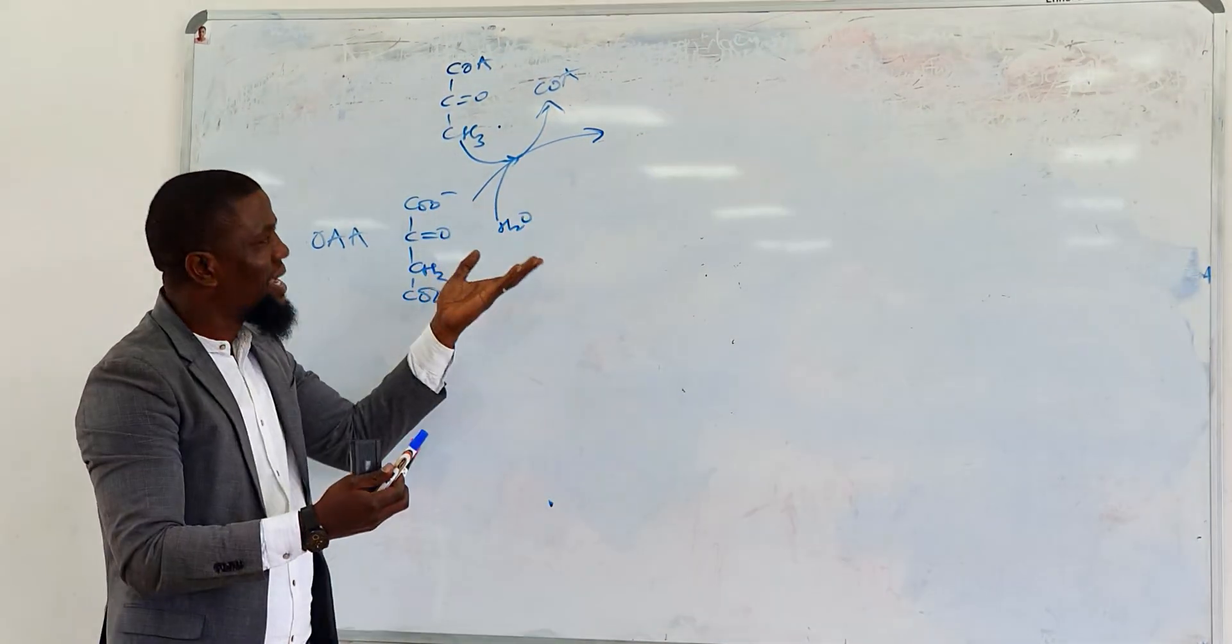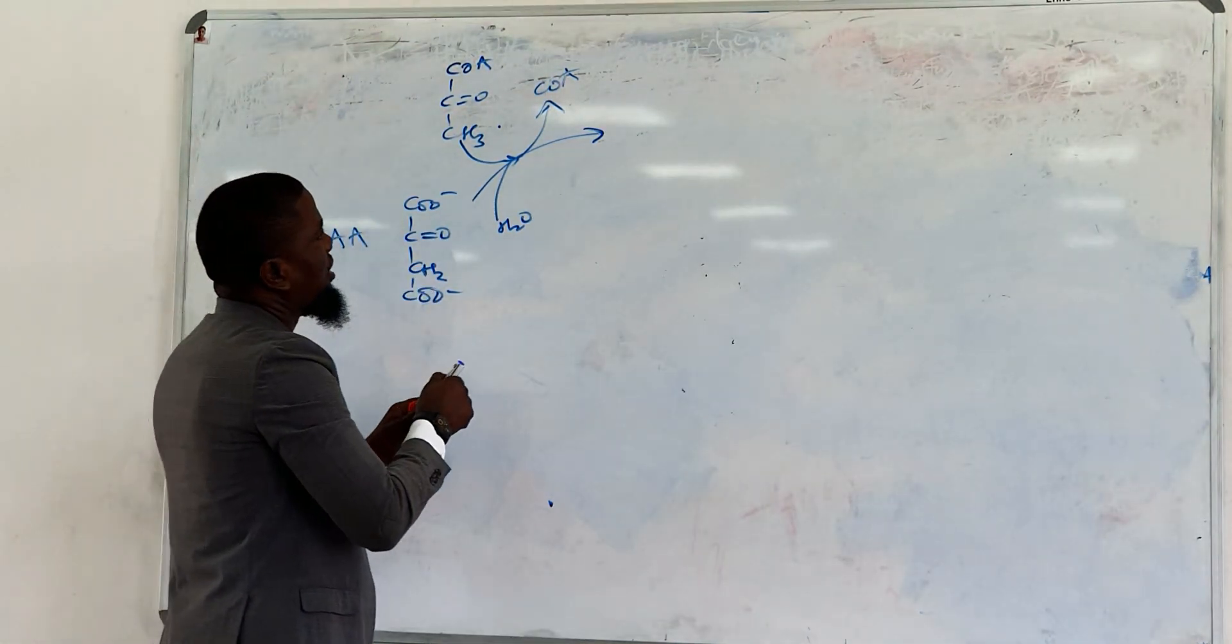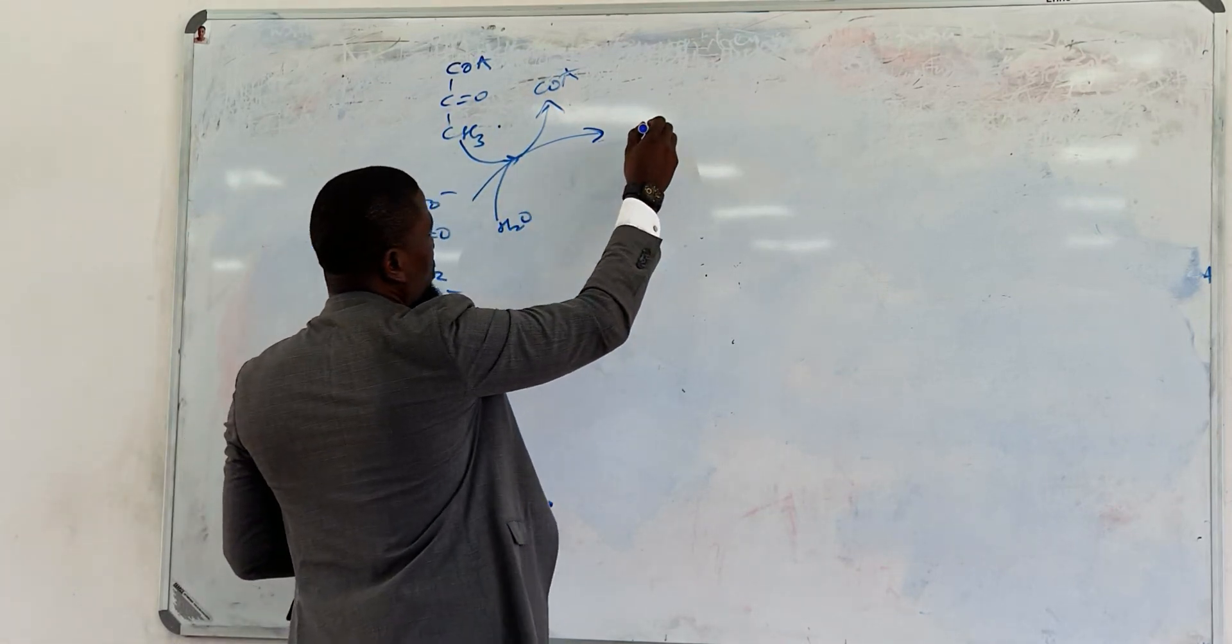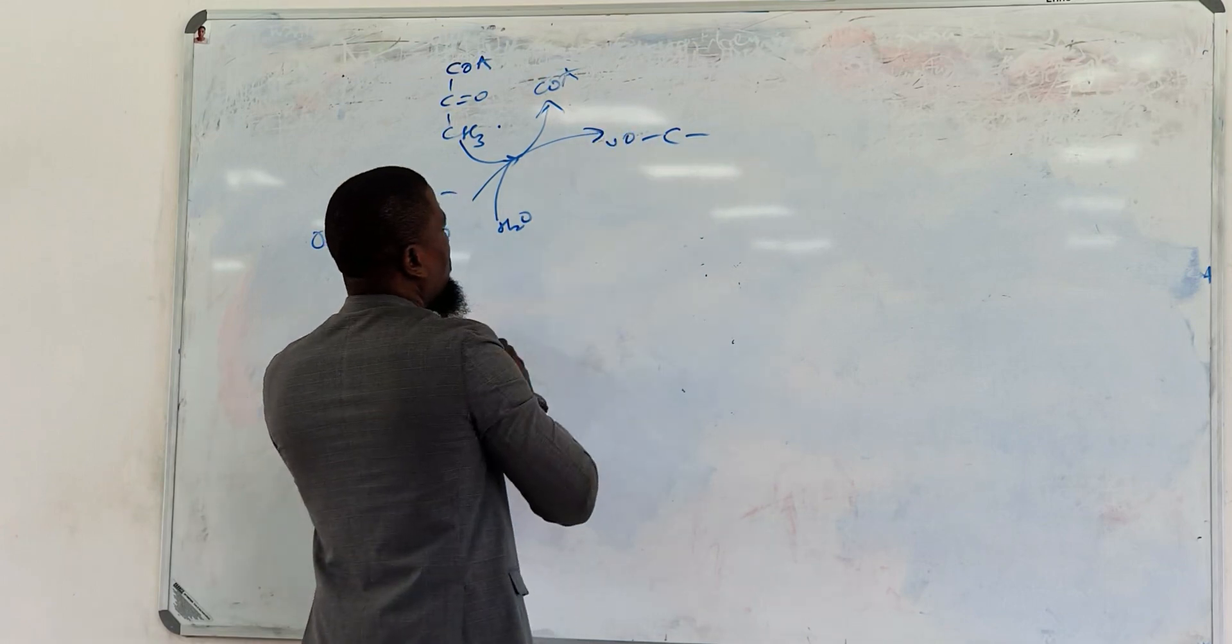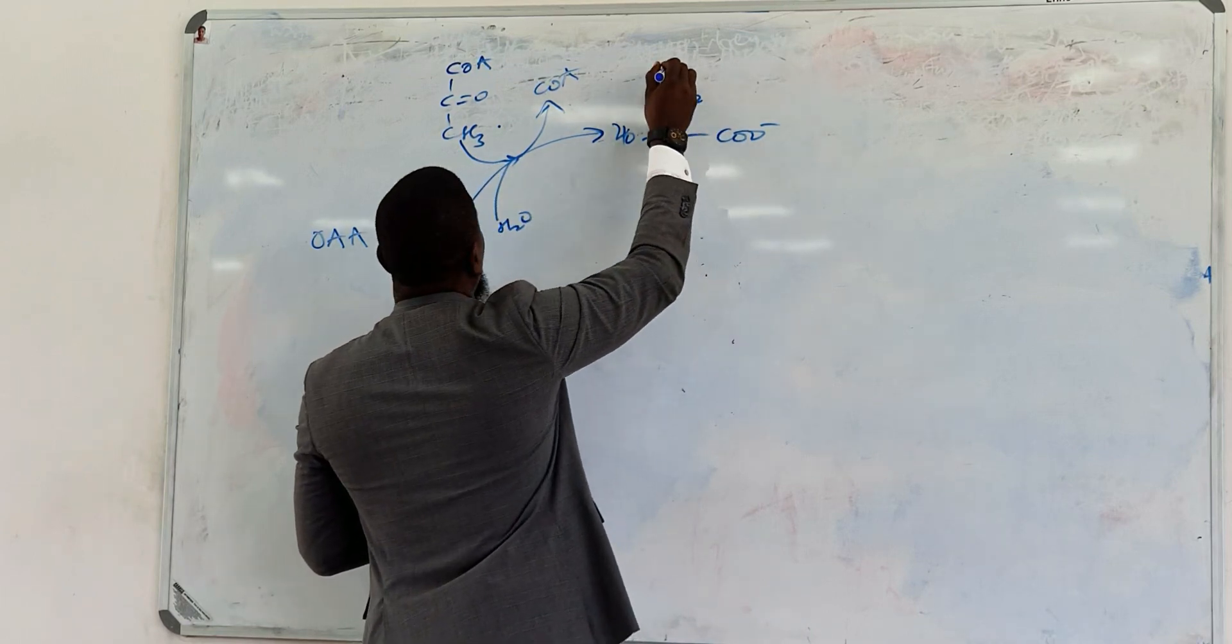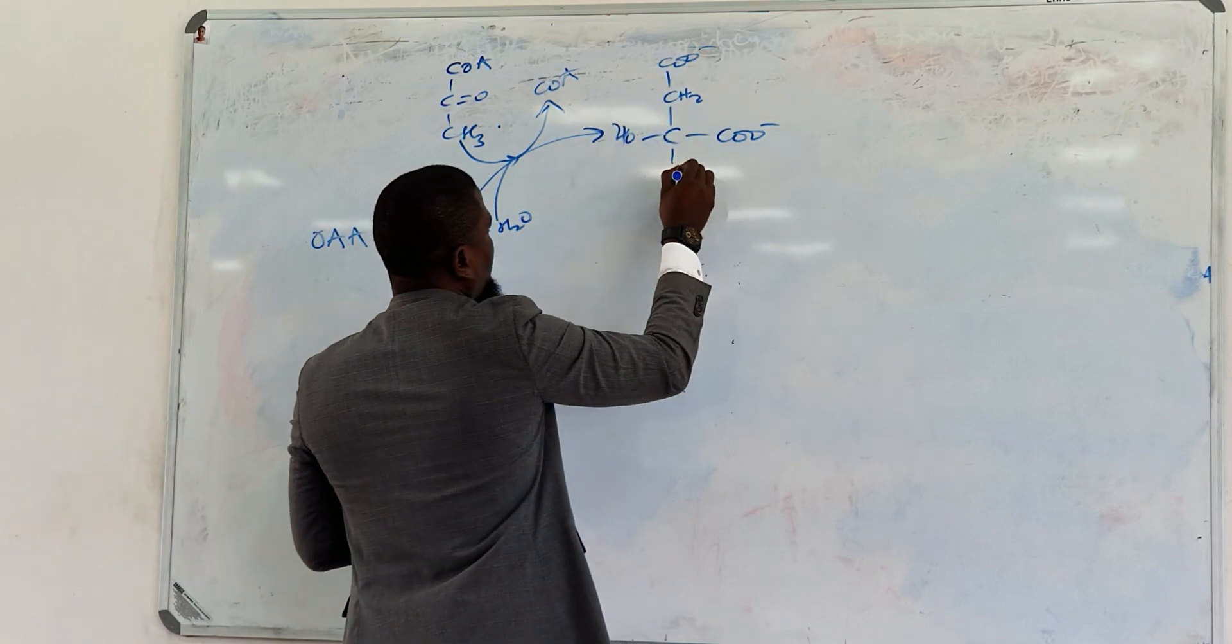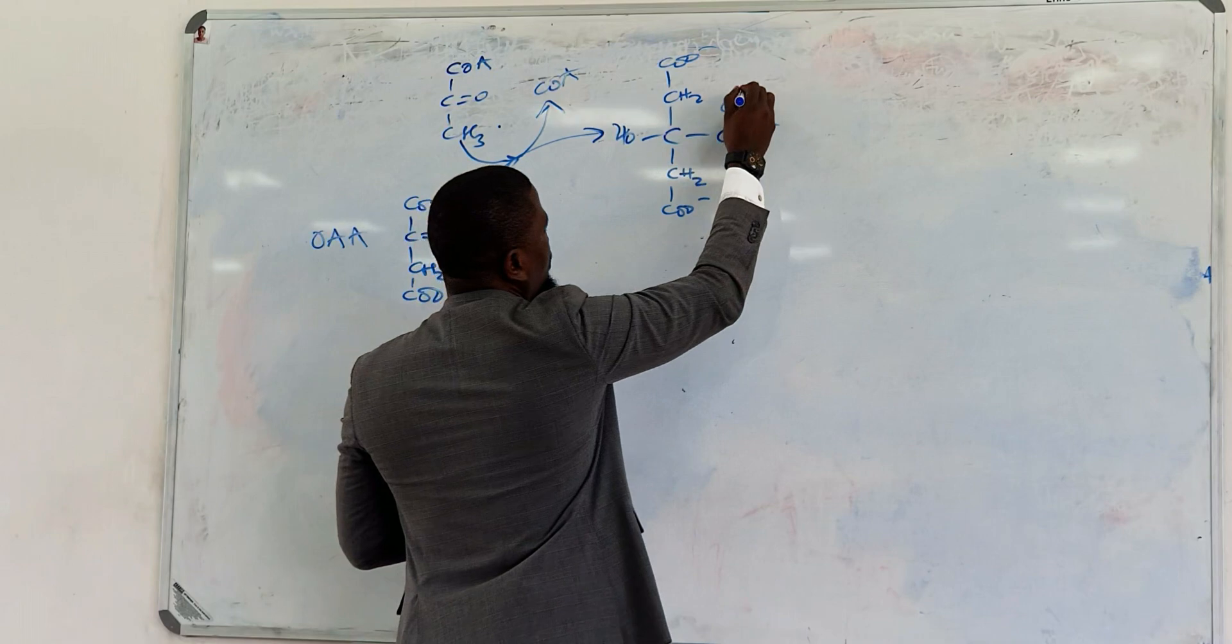So the presence of this CoA as it comes off would drive the synthesis of citrate. This reaction makes sense thermodynamically. So you would see that your end product is actually going to be citrate.